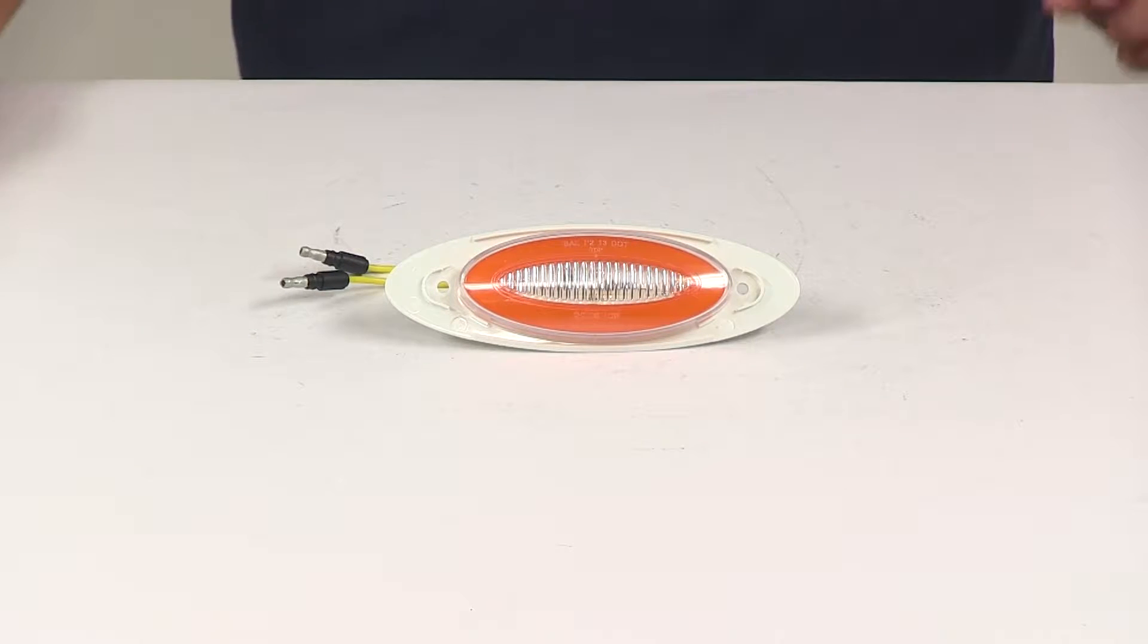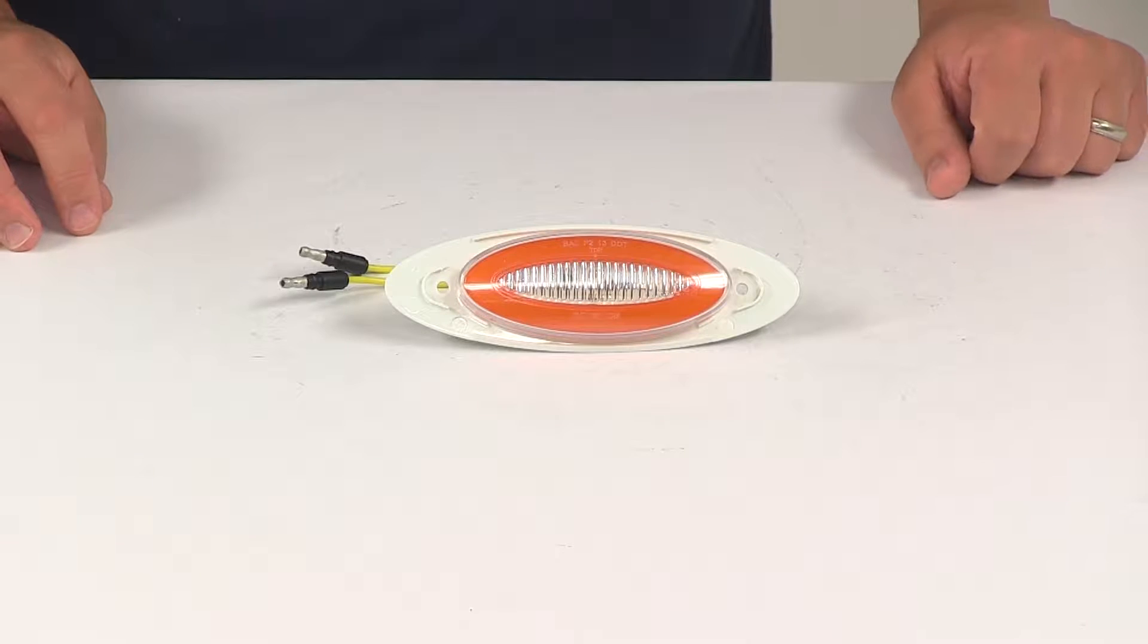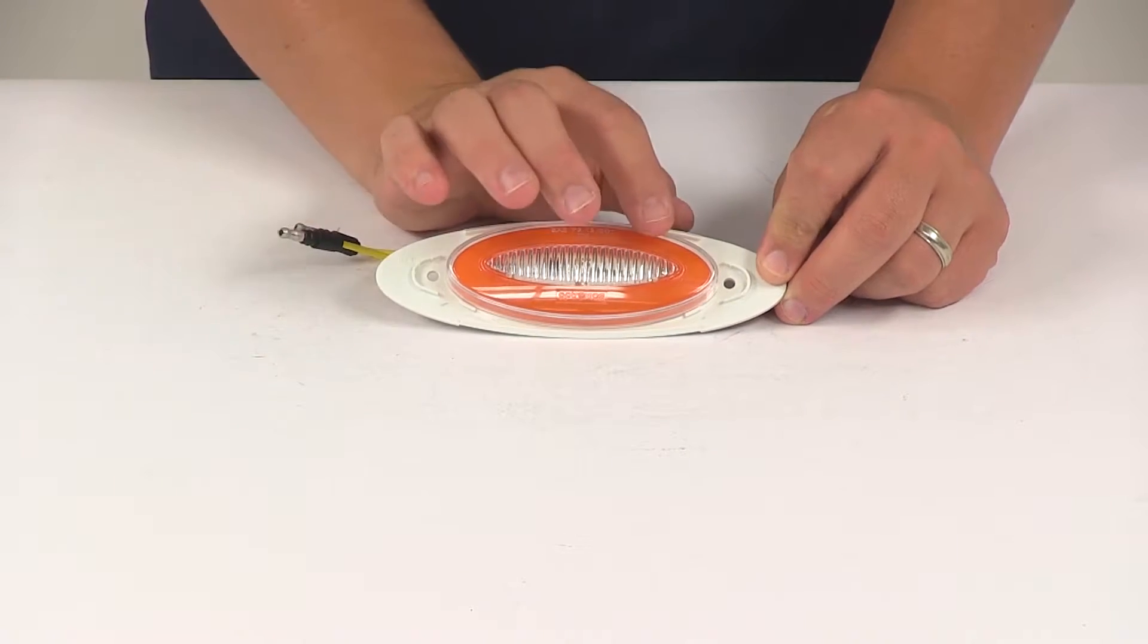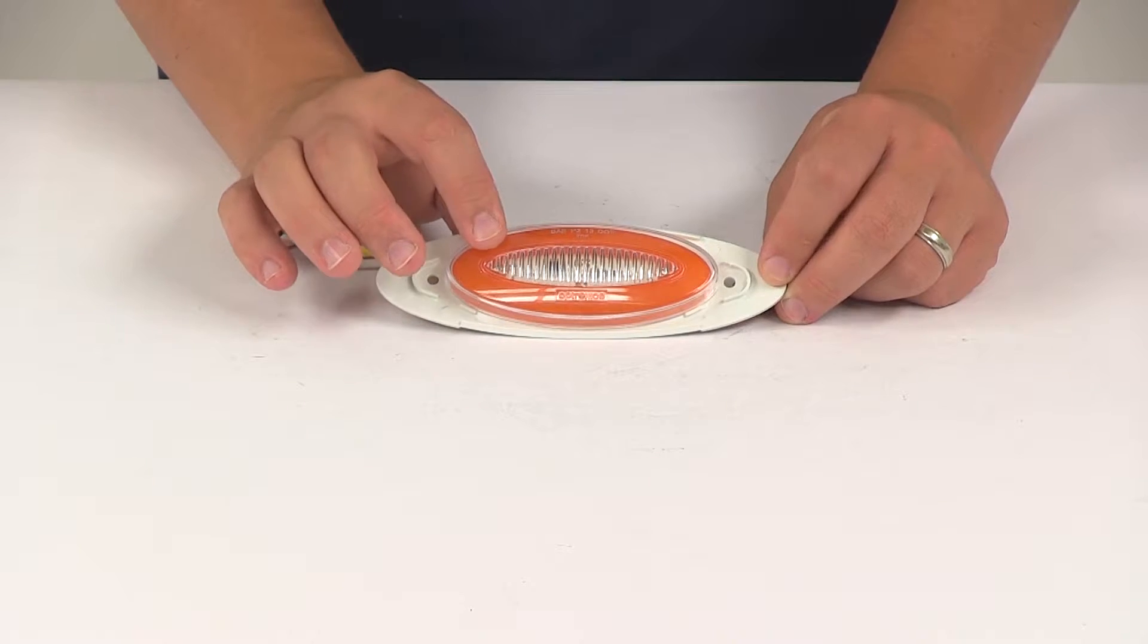Today we're going to be taking a look at the Optronics Glow Light M1 LED clearance or side marker light. This is an oval trailer light that features a nice smooth bright outer band.